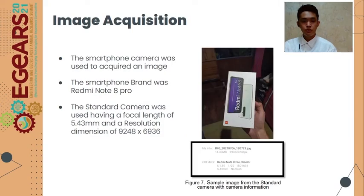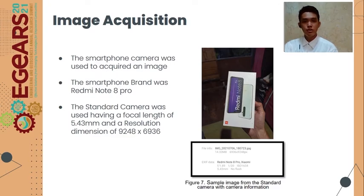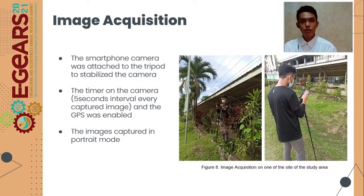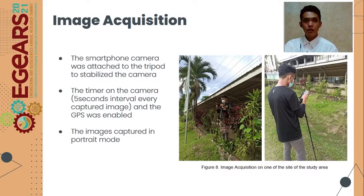For image acquisition, the smartphone camera was used to acquire images. The brand of the smartphone was Xiaomi Redmi Note 8 Pro, using the standard camera with a focal length of 5.43 millimeters and a resolution of 9248 by 6936 pixels. During image acquisition, the smartphone camera was attached to a tripod to stabilize the camera and the timer was enabled to ensure good quality images. The GPS on the smartphone was also enabled for geo-referencing.